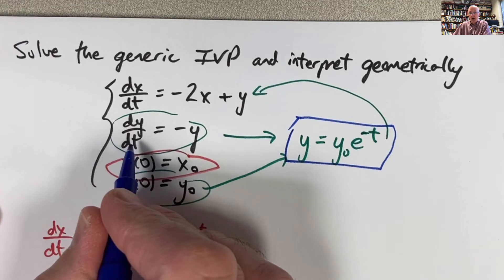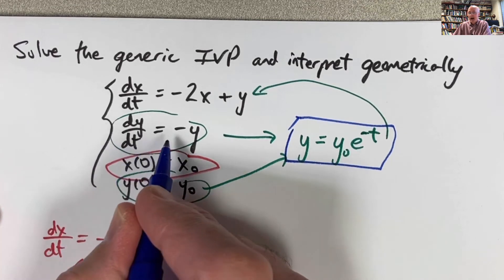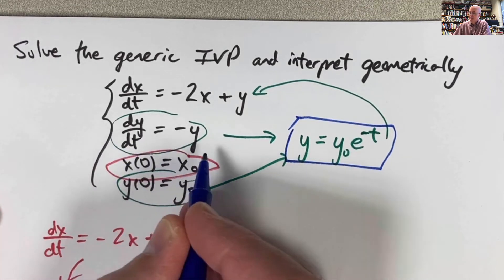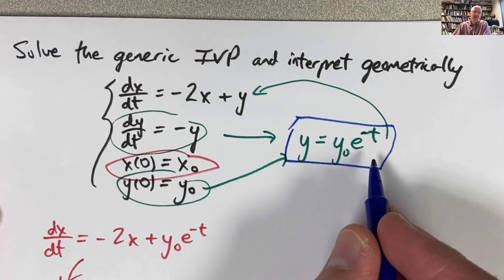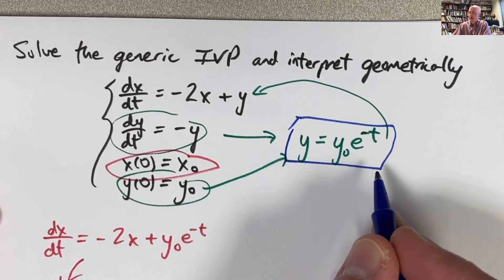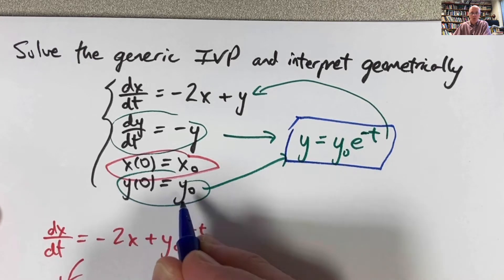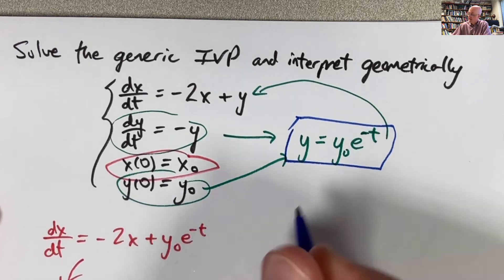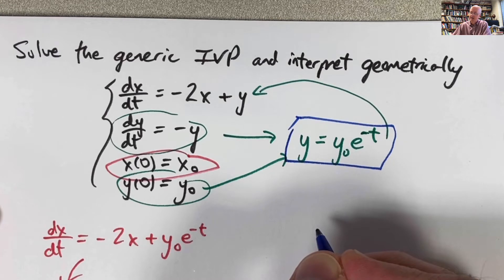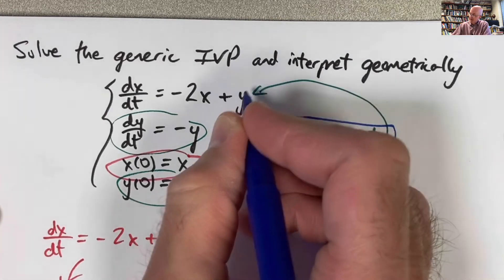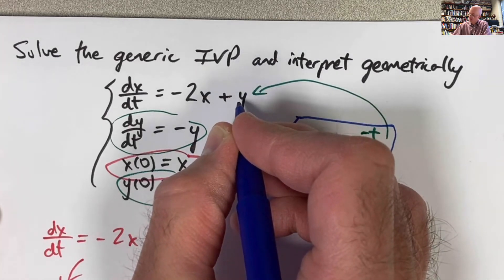This is going to be after a function whose derivative is the opposite of itself, negative 1 times itself. e to the negative t works. Any constant times e to the negative t works. And in fact, if the initial value of y is y sub 0, where y sub 0 is some specific number, that constant has to be y sub 0.